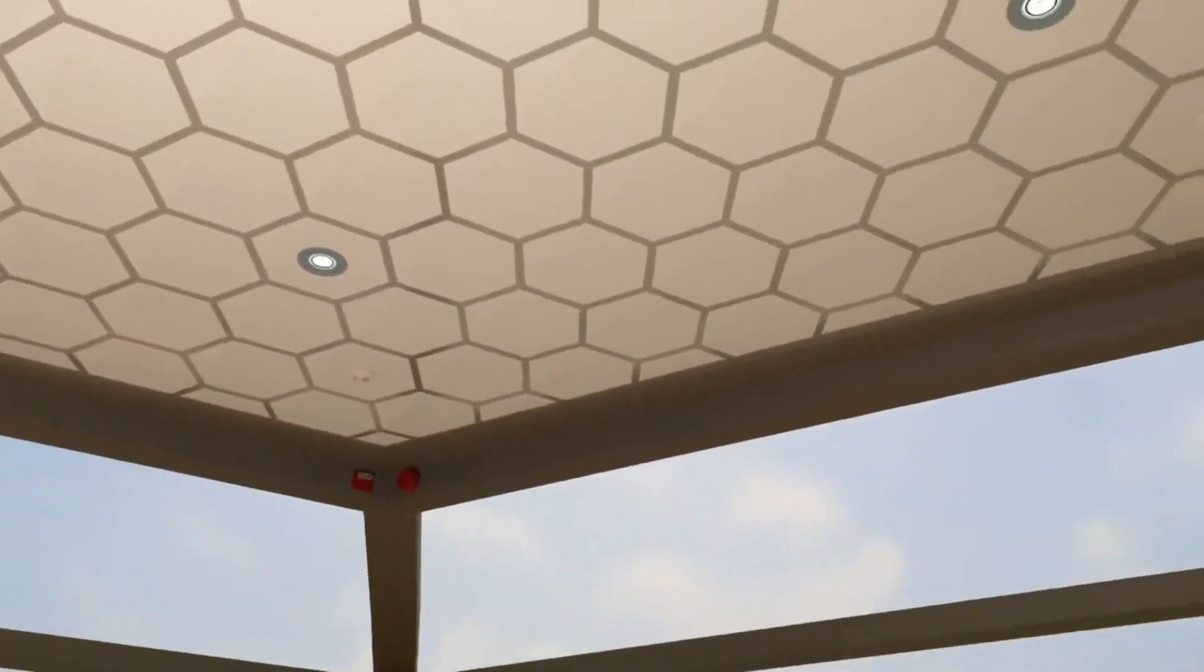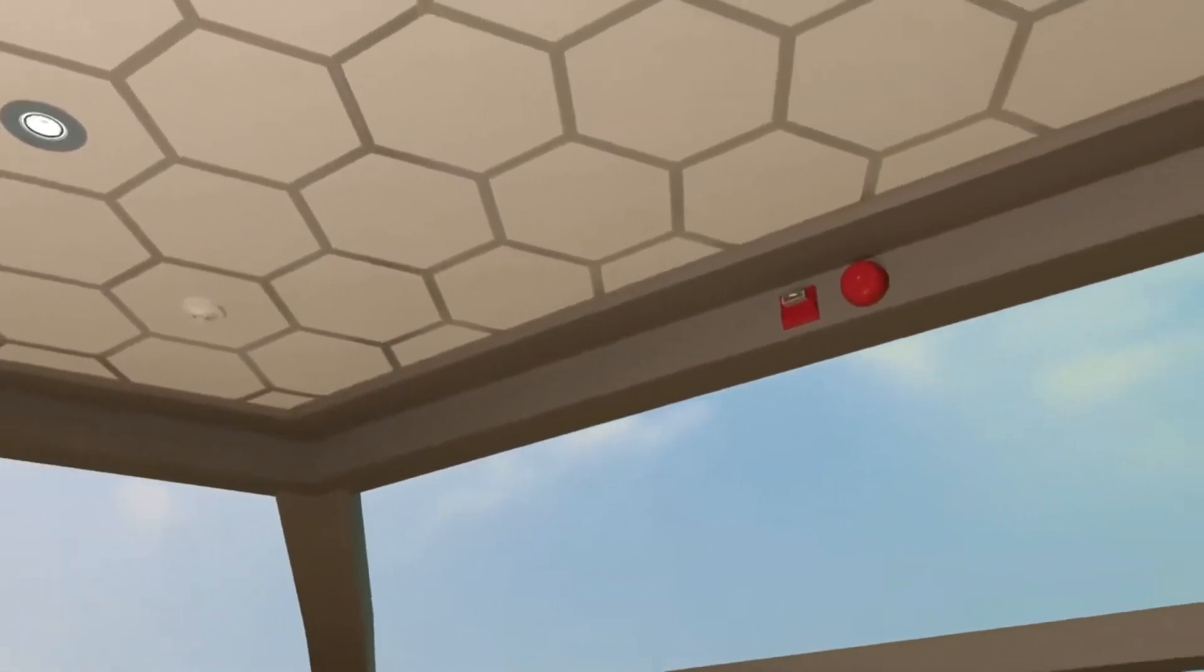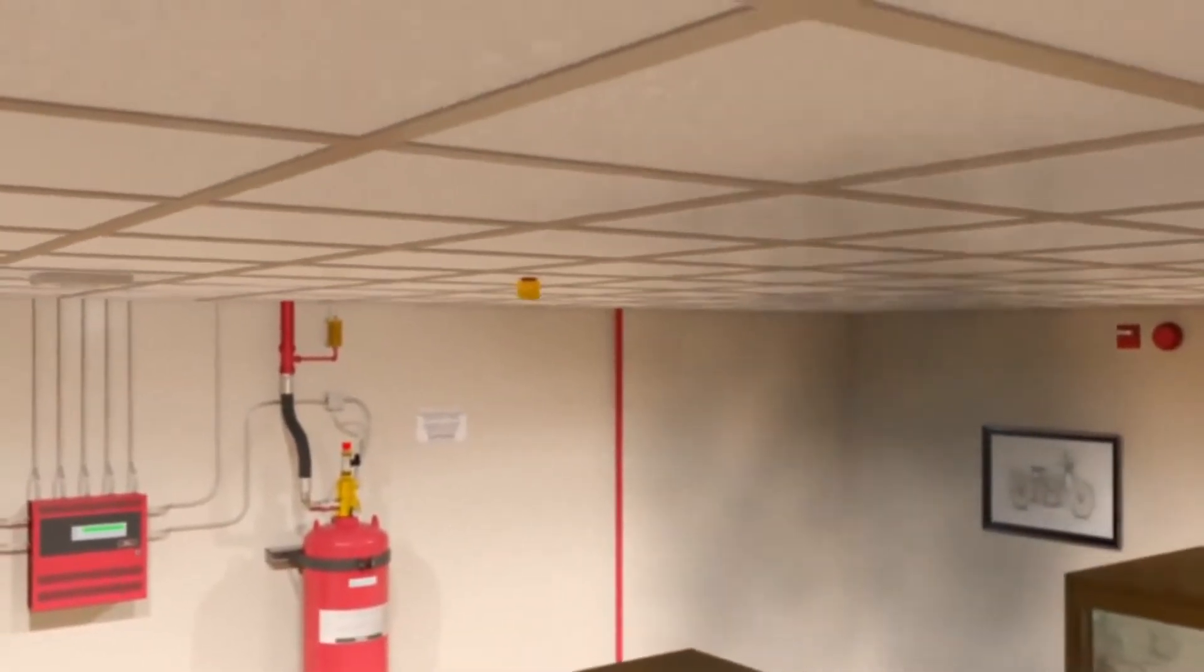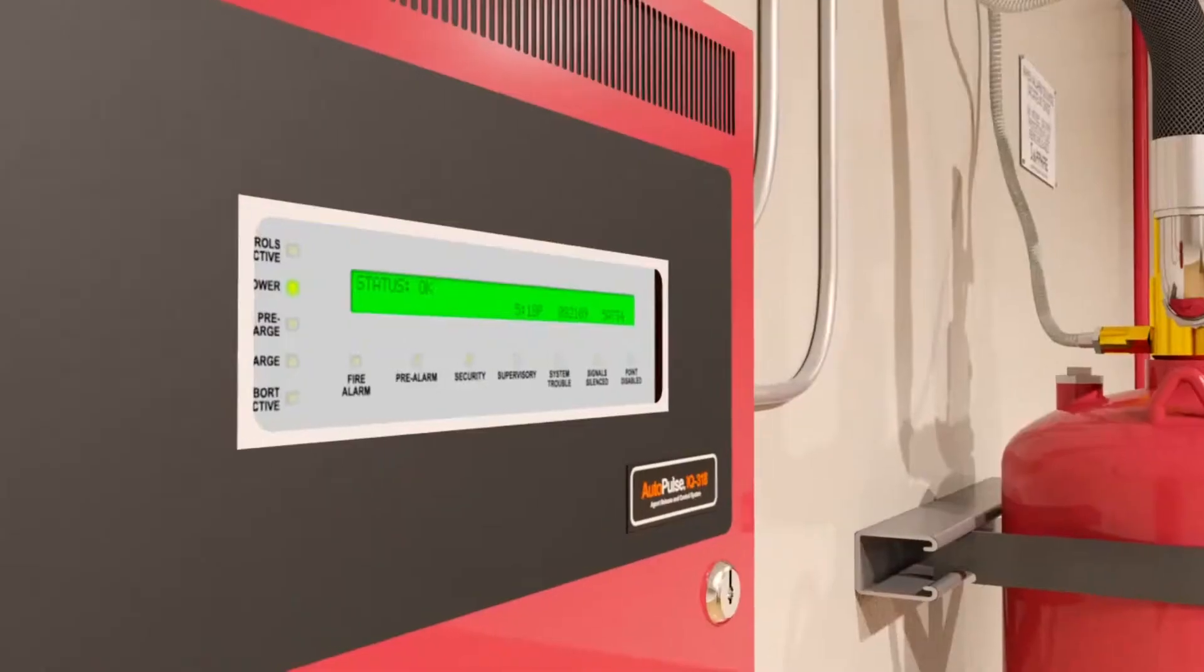The Sapphire system starts with fast acting, addressable detectors placed throughout the special hazard area. When smoke or particulates are detected, an electric signal is sent from the smoke detector to the auto pulse control panel.